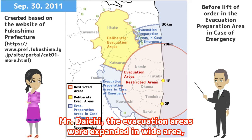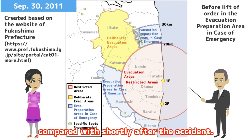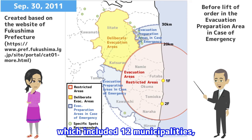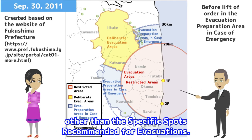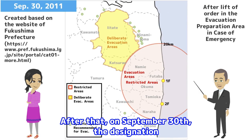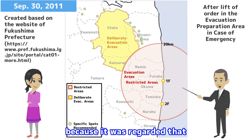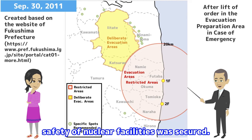Mr. Daiichi, the evacuation areas were expanded to a wide area compared with shortly after the accident. Correct. This is the term when the evacuation areas became largest, which included 12 municipalities, other than the specific spots recommended for evacuation. After that, on September 30, the designation of the evacuation preparation areas in case of emergency was lifted, because it was regarded that the safety of nuclear facilities was secured.